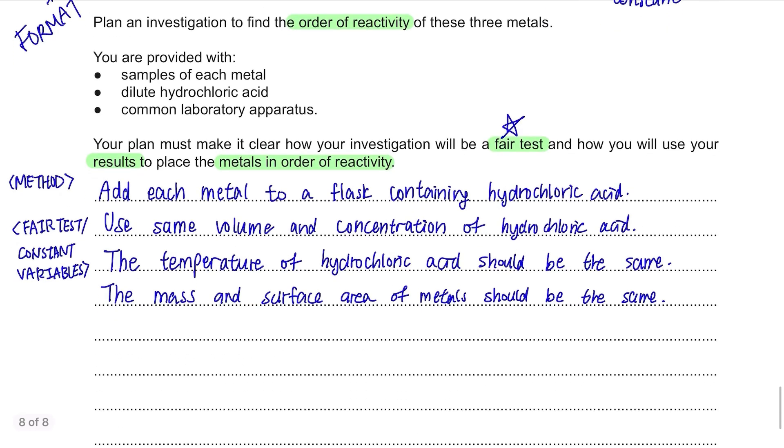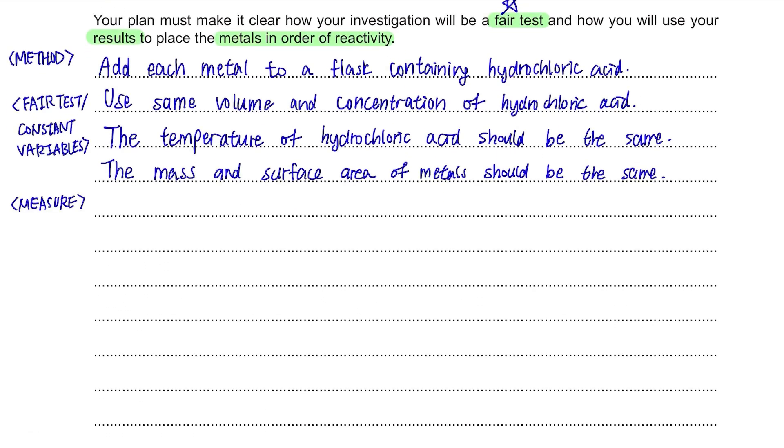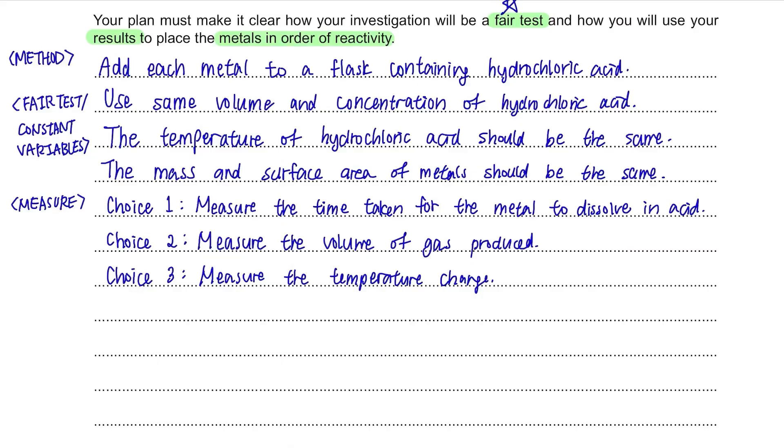Third step is to state how you're going to measure the experiment. Each metal and hydrochloric acid react together and there are many ways to measure the rate of this experiment. You can measure the time taken for the solid to disappear or you can measure the amount of gas produced or even measure the temperature change. I'll go with the time taken for the solid to disappear since it's the most obvious one and it's less complicated.